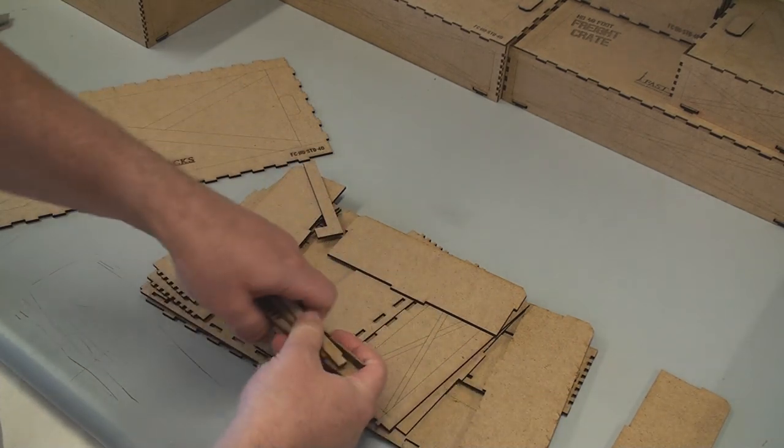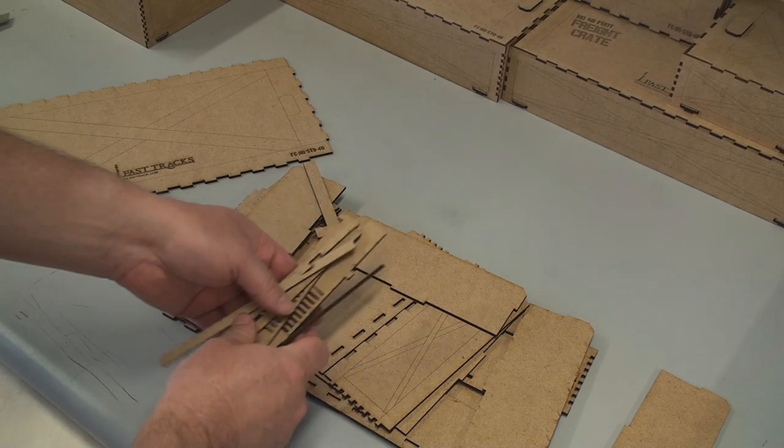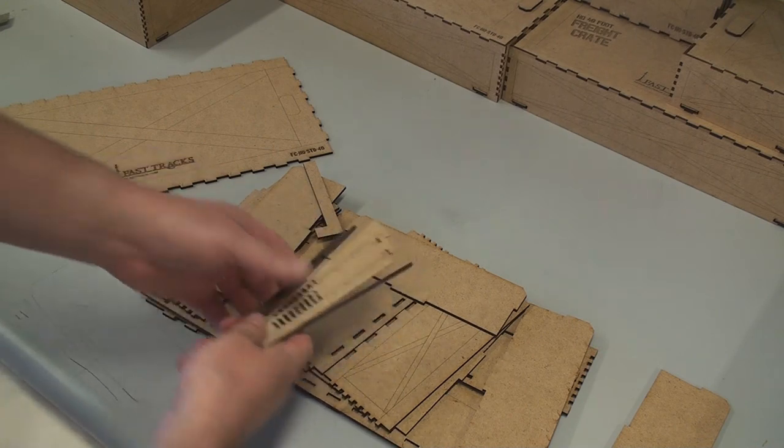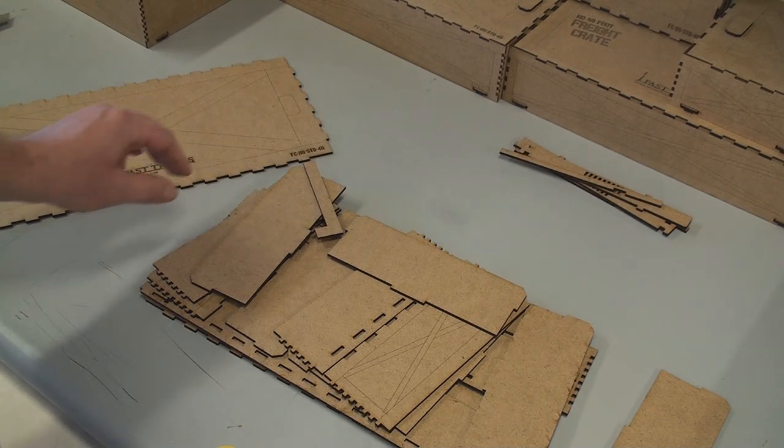So I'm going to separate the parts out. These are the pieces for the key lock. We won't need those until later on in the build. Set those aside.